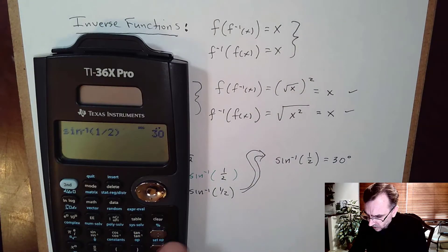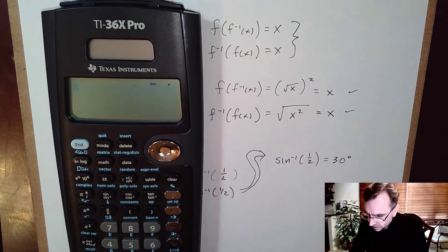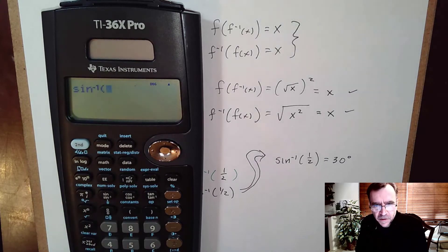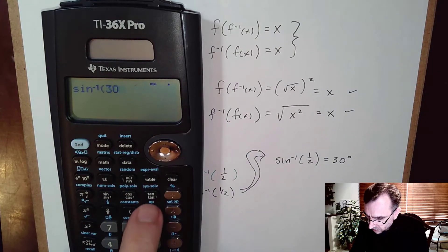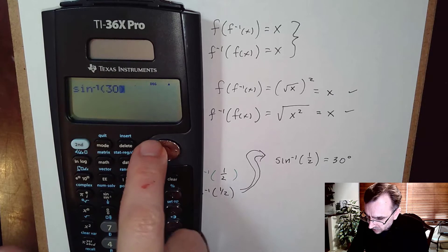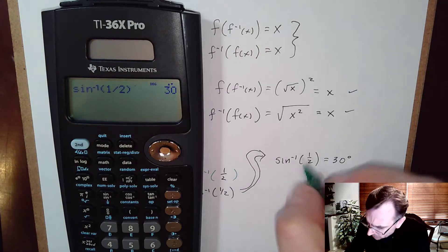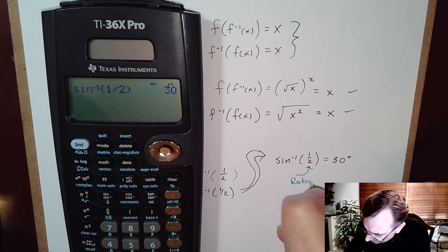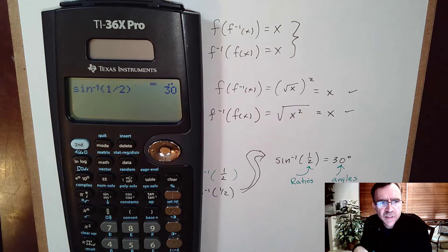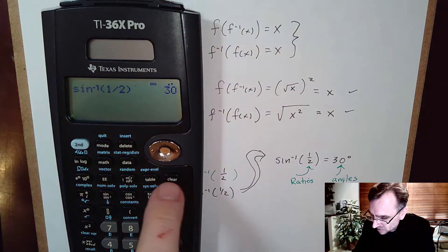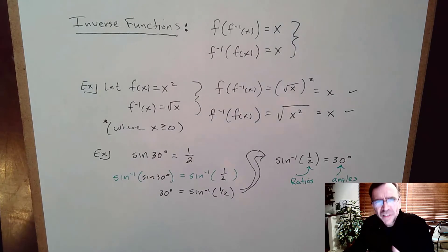We can test that on a calculator. On my calculator the inverse is a toggle — hit the sine button once for sine, again for sine inverse. Since I'm in degree mode, I type in the ratio 1/2, and sine inverse of 1/2 gives 30 degrees. Notice: sine inverse takes in ratios and returns angles, unlike the sine button which takes an angle and returns a ratio.